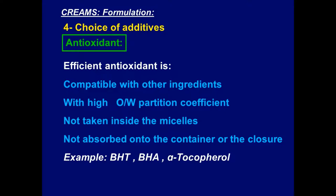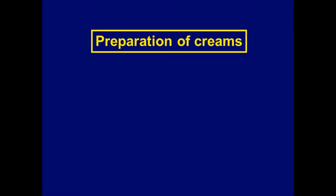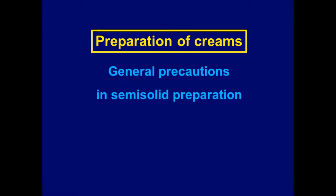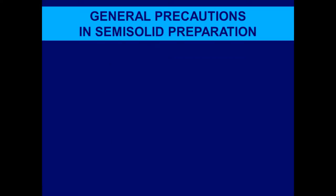You should memorize the names of these antioxidant examples because in the exam you may be given a prescription and asked about the role of one or more ingredients. If you find butylated hydroxytoluene in the prescription, you should know it is an antioxidant. Now we know the definition, types, and formulation of creams — it is time to discuss how to prepare creams and the general precautions in semi-solid preparation.